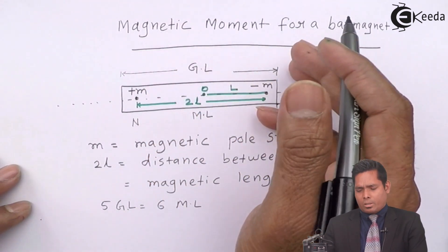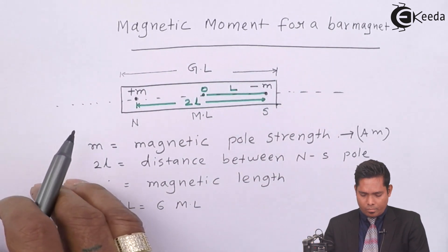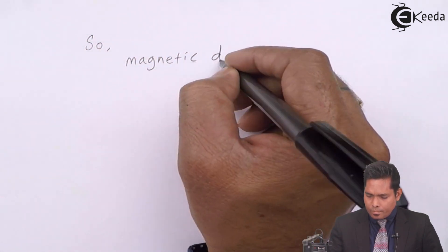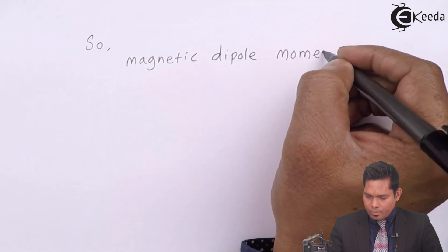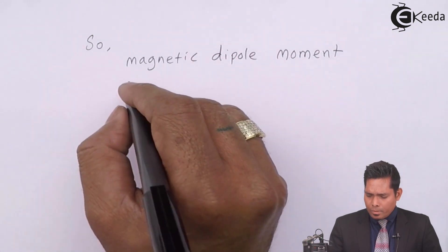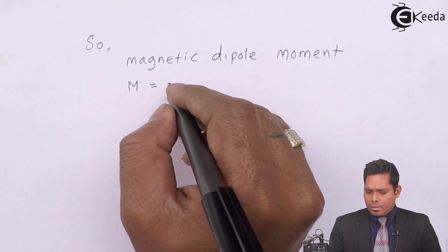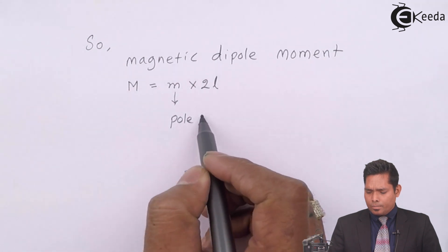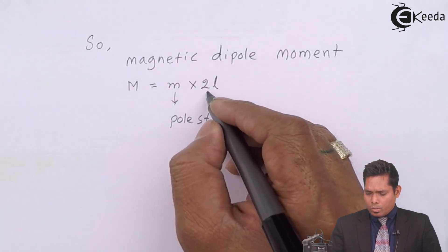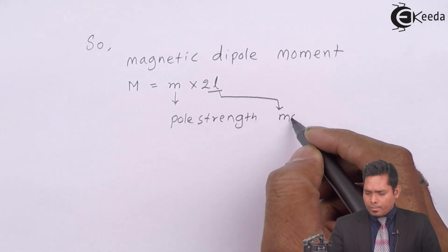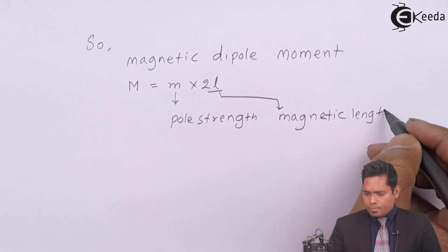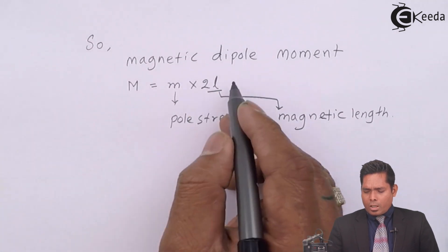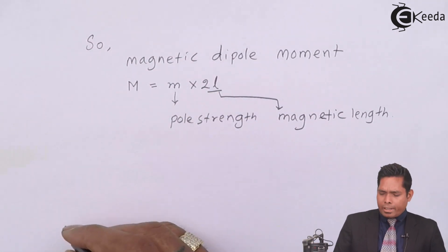The magnetic dipole moment and magnetic moment mean the same thing. The magnetic dipole moment, capital M, is the product of the pole strength m and the magnetic length 2l. This is the formula for magnetic dipole moment. Next is the unit.